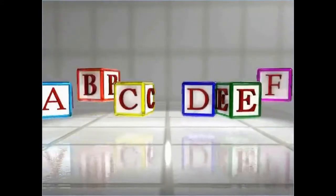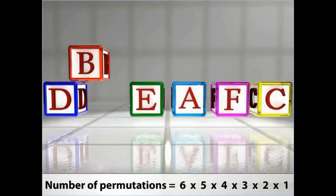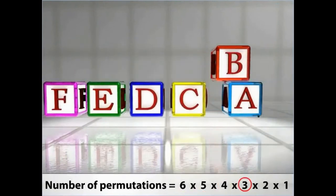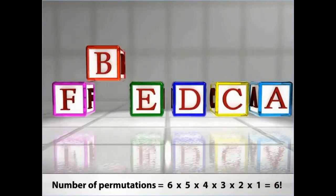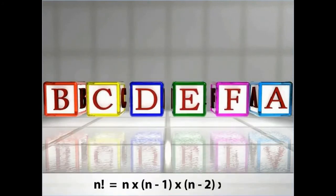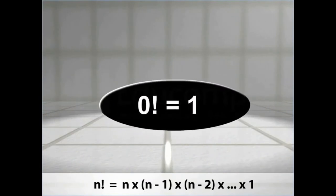What if you had six blocks? According to the previous procedure, permutations are equal to the product of the first six natural numbers. This calculation will consume a lot of time. To avoid such lengthy calculations, factorial notation is used. You can represent the product of the first six natural numbers as six factorial. This helps you deduce that the symbol n factorial represents the product of the first n natural numbers. Also note that zero factorial is equal to one, as there is only one way to do nothing.